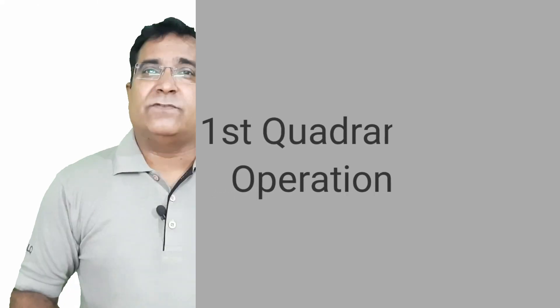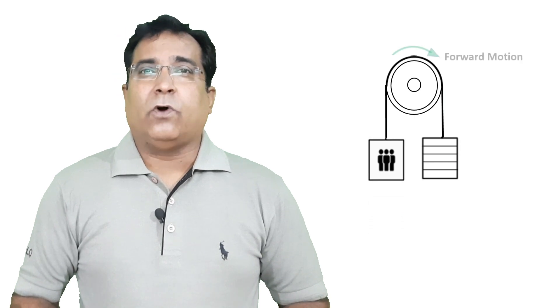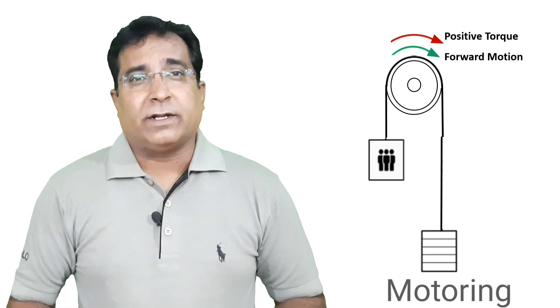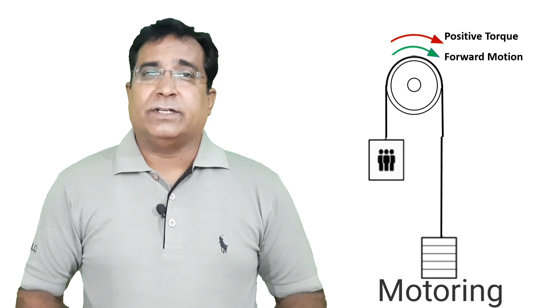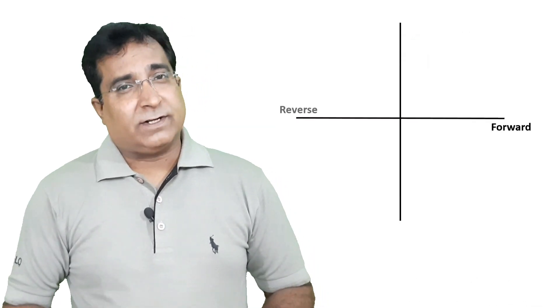So let us discuss the first situation, when the car is full and has to go from bottom to top. Now the weight of car is more than counterweight. So the motor has to perform work to pull full car upward. The motor has to run in forward direction and torque to offer in the same direction. As motion and torque are in same direction, this is motoring action as simple as that. And this operation comes under first quadrant.